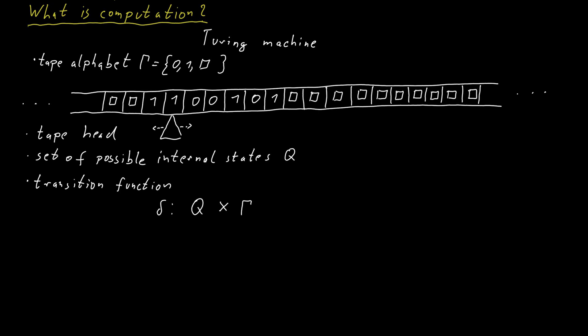And it then tells you, based on this information, what the new internal state of the machine will be, so what state the machine should switch to, what character the machine should write onto the tape in the current position. So the head points to a particular cell now and we replace whatever is written there with a new character. And then the transition function also specifies how the tape head should move. So either the tape head moves one cell to the left or it stays where it is or it moves one cell to the right.